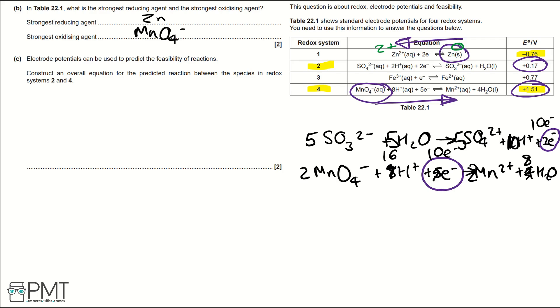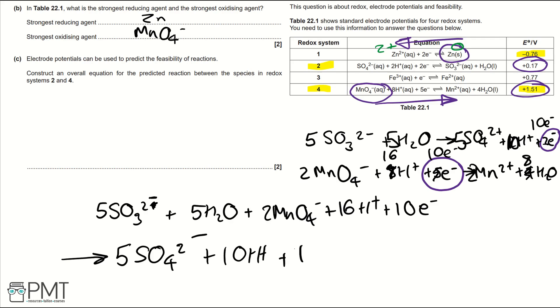So writing our overall equation, initially, we would write 5SO3 2- plus 5H2O plus 2MnO4- plus 16H+ plus 10 electrons in our reactants. And that goes to 5SO4 2- plus 10H+ plus 10 electrons plus 2Mn2+ plus 8H2O.